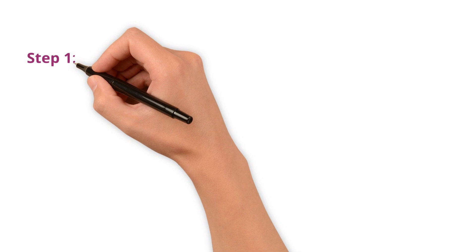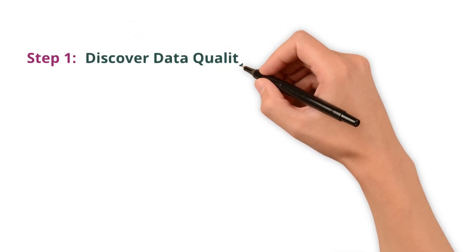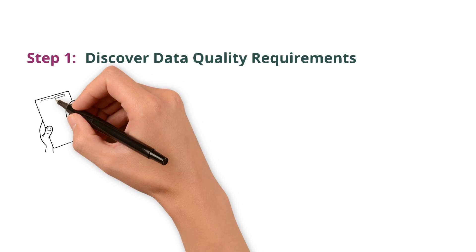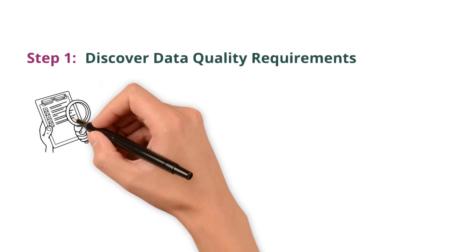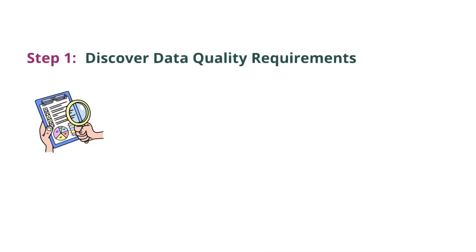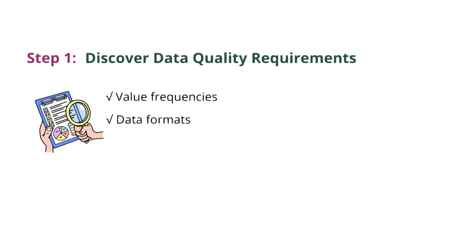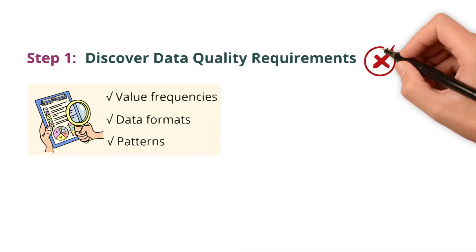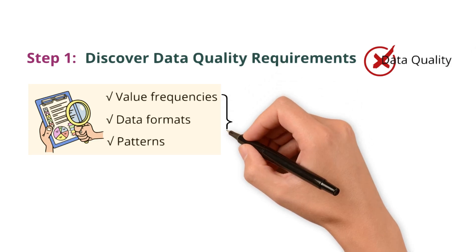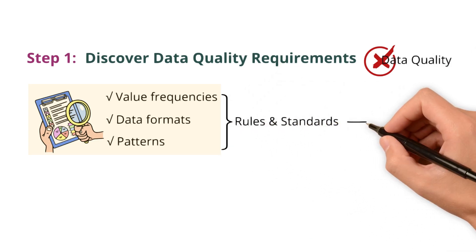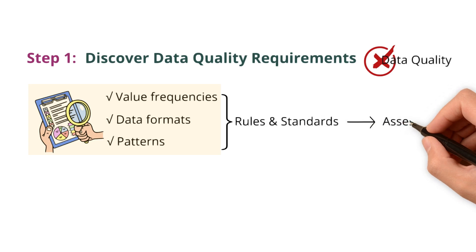Step 1: Discover data quality requirements. This is where you profile your data to uncover things like value frequencies, data formats, and patterns. At this stage, you are not assessing data quality yet. Instead, you are identifying the rules and standards that will guide the later assessment.